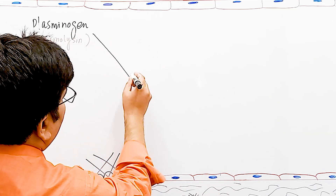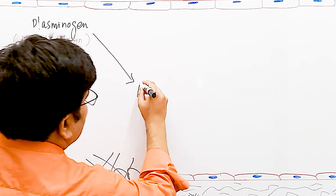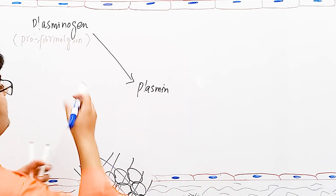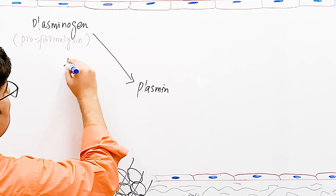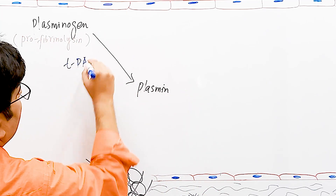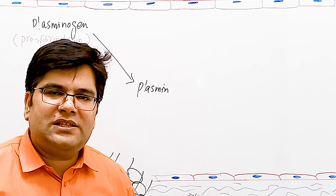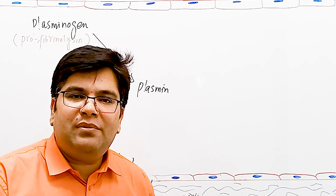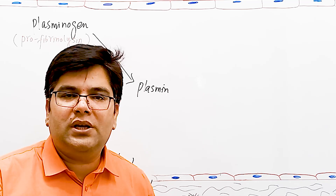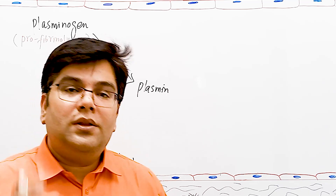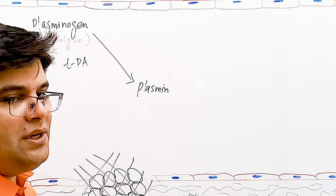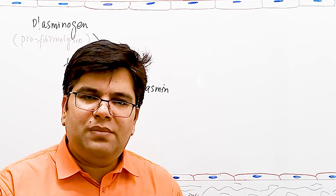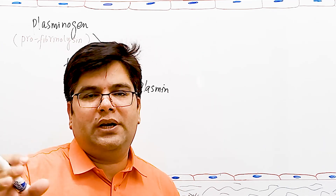Plasminogen is converted into its active form, plasmin, by the action of an enzyme called tissue plasminogen activator (tPA). We call it tissue plasminogen activator because it is released from damaged tissues and especially the endothelium. This tPA is released slowly from the damaged tissue.